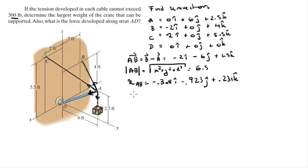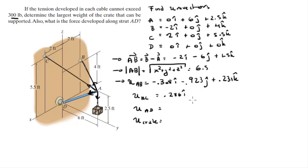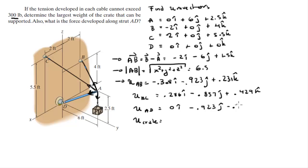In the same manner, find unit vectors AC, AD, and the unit vector for the crate by repeating those three steps. You get: unit vector AC = (0.286i - 0.857j + 0.429k), unit vector AD = (0.923i - 0.423j - 0.385k), and the crate's unit vector goes straight down parallel to the k-axis, so it's simply (-1k).